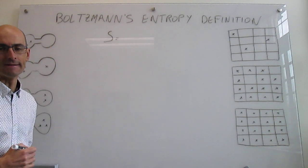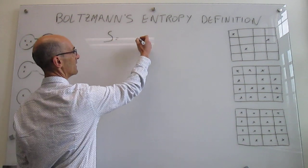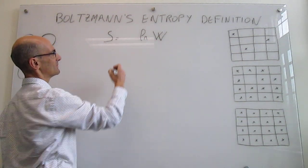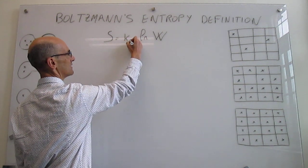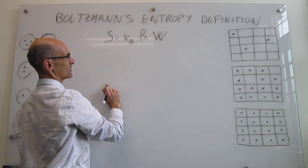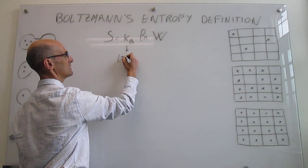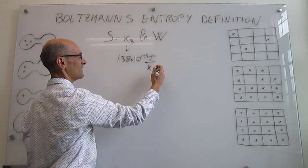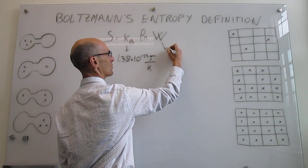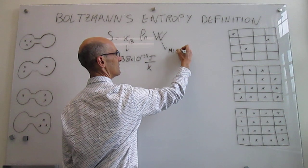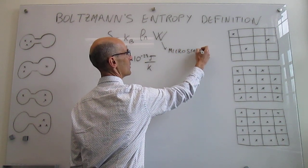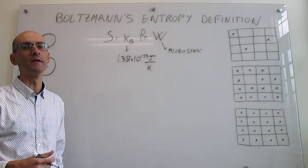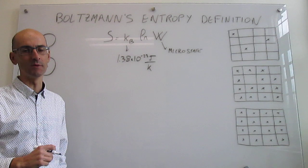According to Boltzmann, the entropy is proportional to the natural log of something we're going to call microstates, and the proportionality constant is Boltzmann's constant — 1.38 × 10⁻²³ joules per Kelvin. This W is what we call a microstate. Let's try to figure out what this microstate is and then see if we can understand this concept a little bit better.